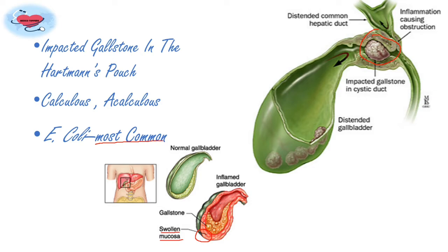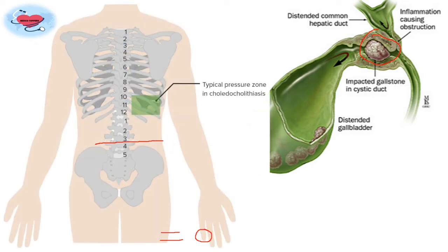Regarding infective causes, E. coli is the most common cause. Others include Klebsiella, Streptococcus faecalis, Salmonella, and Clostridium welchii. As it is an infection, it can spread through the hematogenous route via the hepatic artery or cystic artery, reaching portal circulation. In cholecystitis, the gallbladder wall is distended with an edematous, friable wall with dilated vessels. Necrosis and patchy gangrene can occur, and the mucosa shows ulceration. The lumen may contain infected bile or frank pus.